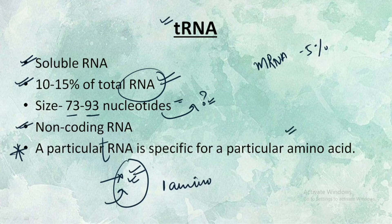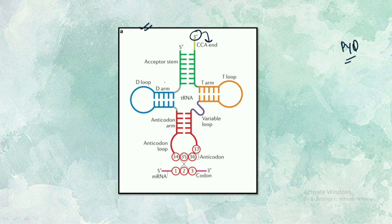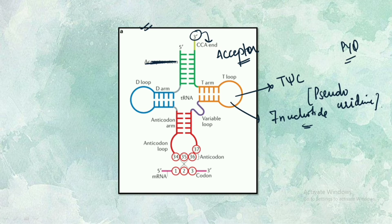Now let's look at the structure of tRNA, which is very important and has many questions framed from it. The first important thing to remember is that at the 3' end there is a CCA end, which is the acceptor arm. Then we have the T-loop — its other name is T-psi-C, or in other words pseudo uridine. You have to remember these different names. The T-loop is a seven nucleotide structure. Then we have a variable loop whose size is not constant.